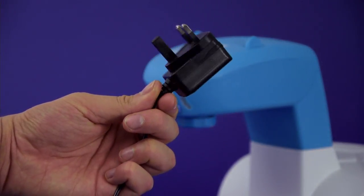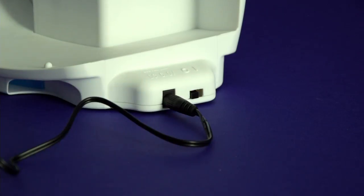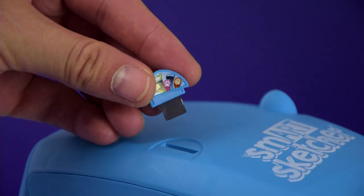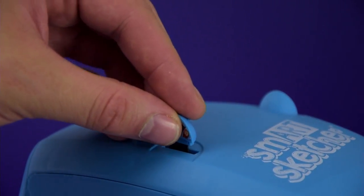Plug the mains adapter cord into the back of the base unit. Insert the pre-loaded activity card into the slot on the top of the projector head.